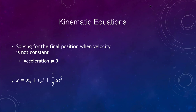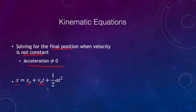Our next equation shows us how to solve for final position when the velocity is not constant — that is, when there is a non-zero acceleration. The first part of this equation looks familiar: final position equals initial position plus velocity times time. However, if the acceleration is non-zero, we need an additional term. If acceleration were zero, that term would go away and you could use the basic equation. You can look in the textbook to see how this additional term is derived. Let's look at an example using this equation.